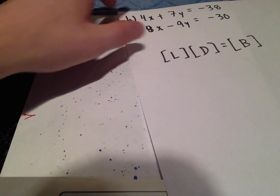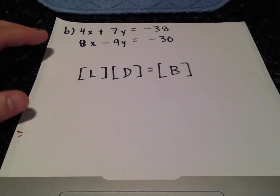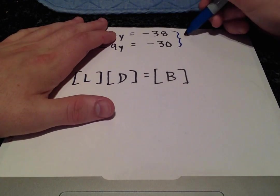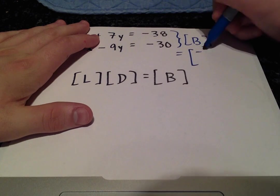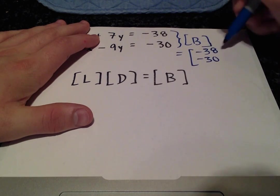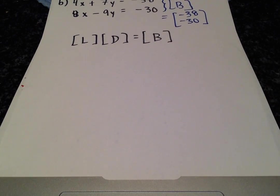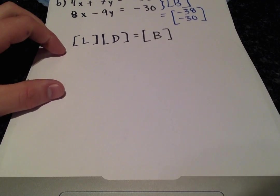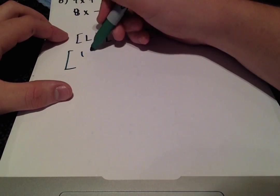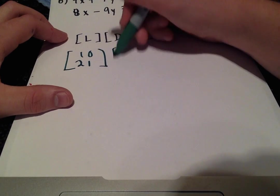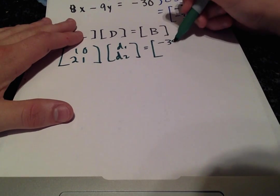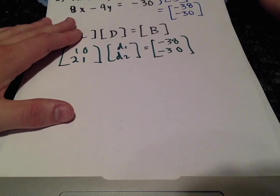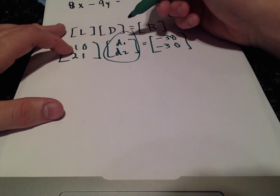Let's move on to part B. Once again, the only thing that is changing here is the B vector, which in this case equals negative 38, negative 30. We can fill that in below with the appropriate values. LD equals B. This will be the same, with the only thing that's changing is the B vector, which will change our D vector here.